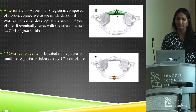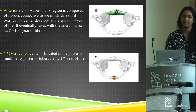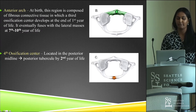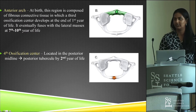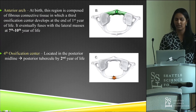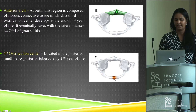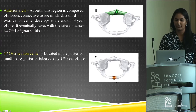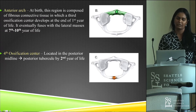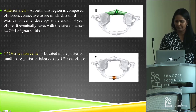Some studies have noted a fourth ossification center in a small subset of patients, found directly in the posterior midline. This gives rise to the posterior tubercle and is supposed to occur at the second day of life.